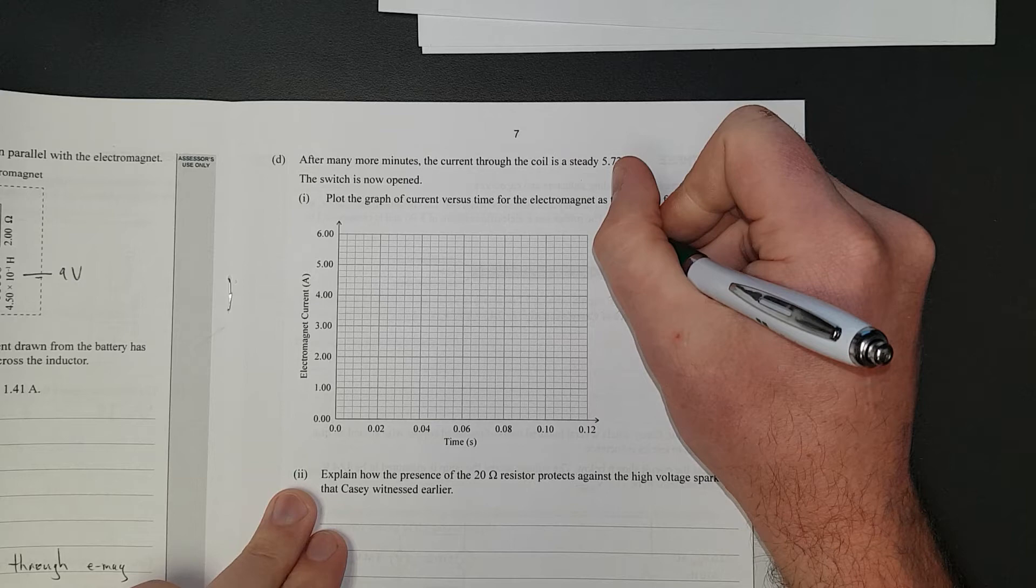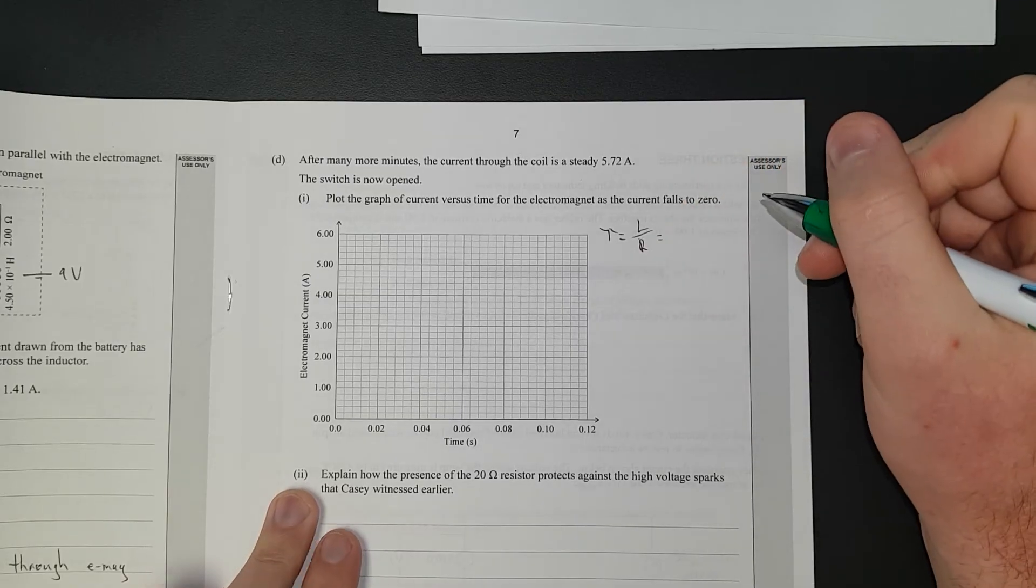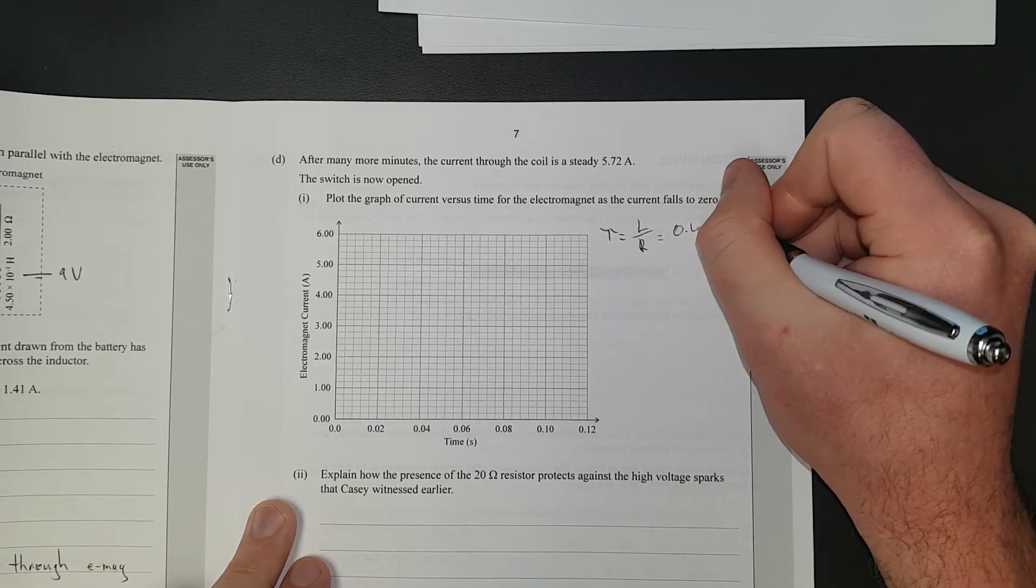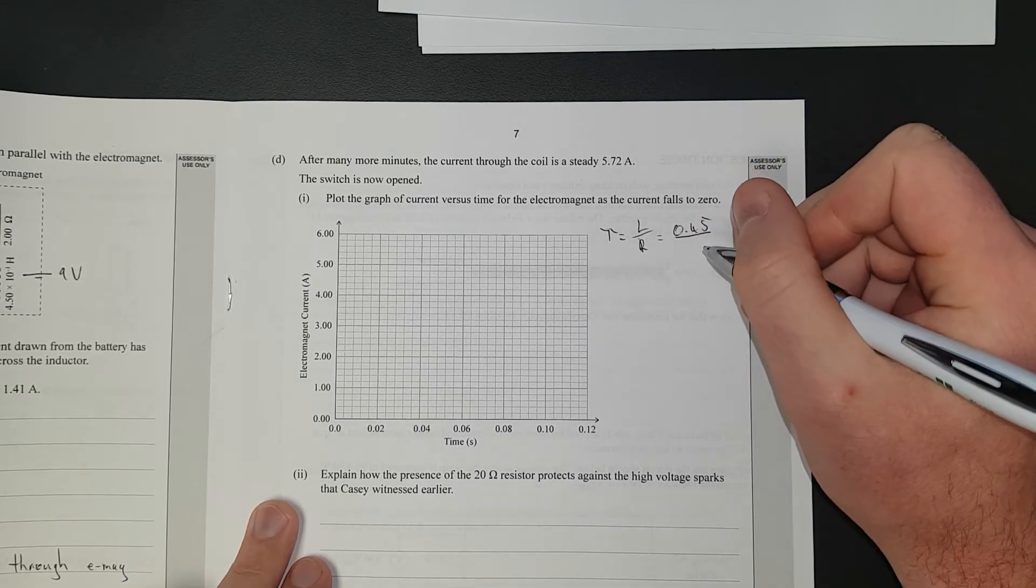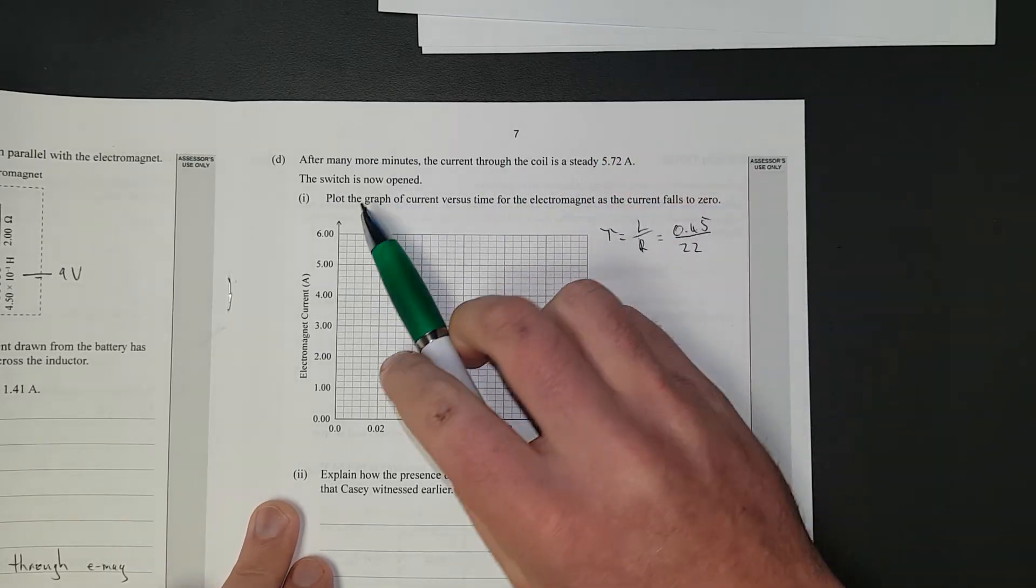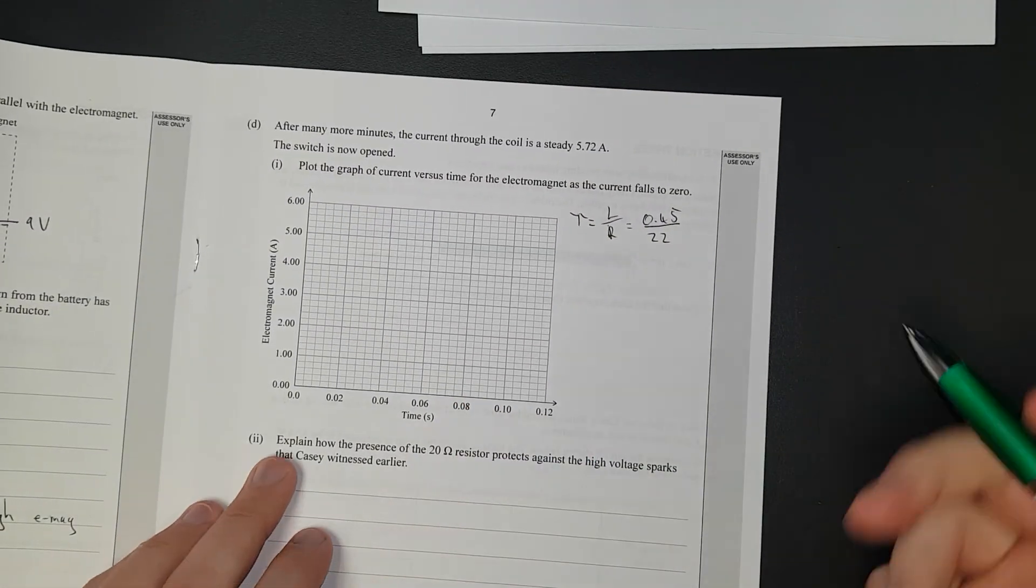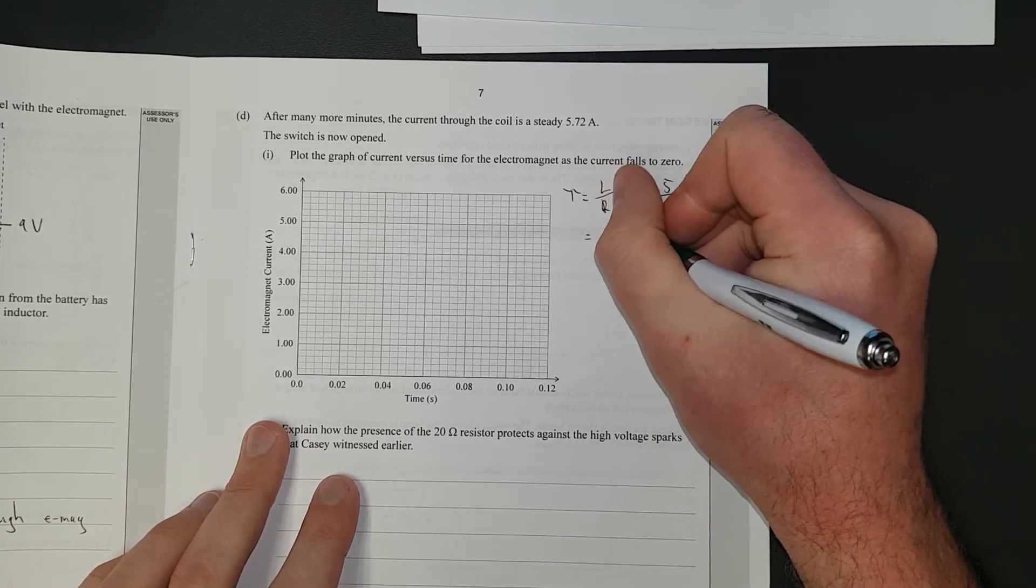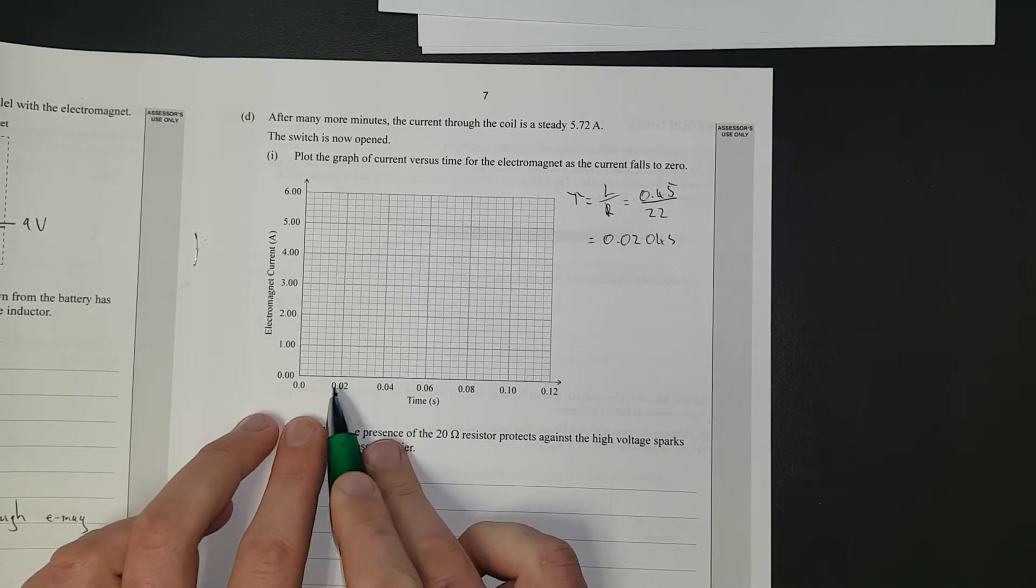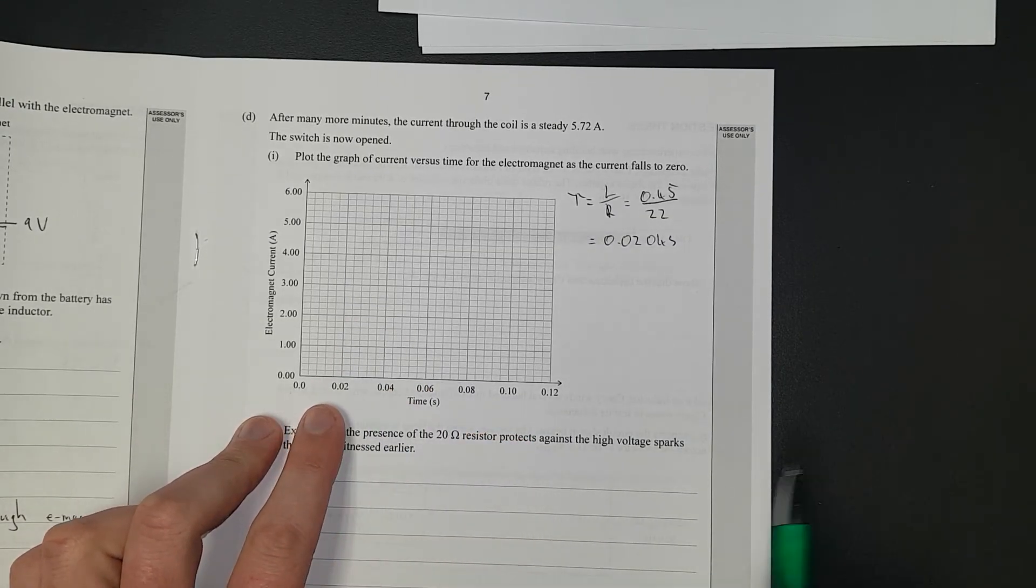We'll just write time constant is equal to the inductance divided by the resistance and then it's going to be equal to 4.5 times 10 to negative 1, 0.45 divided by, what have we got? 2 ohms, 20 ohms. They've opened the switch, so it's just this single loop here, and then it's going to give me 0.0204 seconds. Oh, look at that, it works out so well. Yeah, they do this in exams, they always make it so it ends up being on the axis.